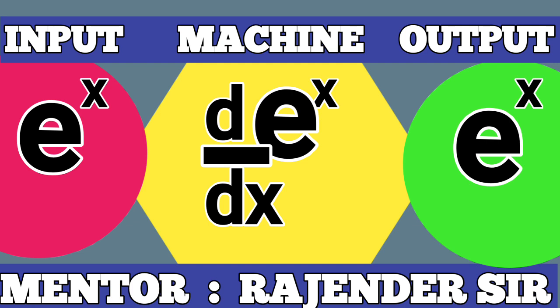e raised to x is the input, it goes into the machine and what comes out is again e raised to x. So derivative of e raised to x is e raised to x.